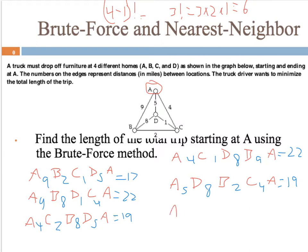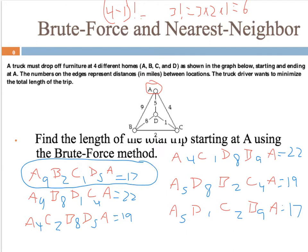The last possibility is A→D→C→B→A: 5 + 1 + 2 + 9 = 17. As expected, it's a mirror image of the first route and comes out the same. So either A→B→C→D→A or A→D→C→B→A are the optimal routes — both 17 miles — and they're just mirror images of each other.